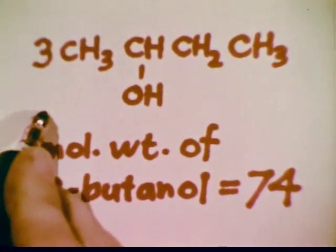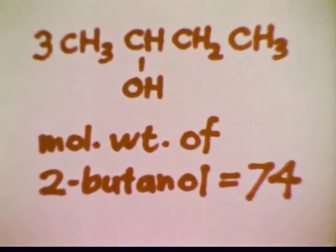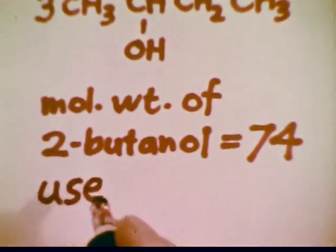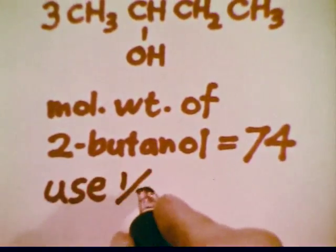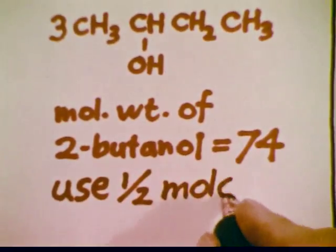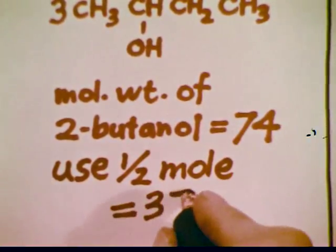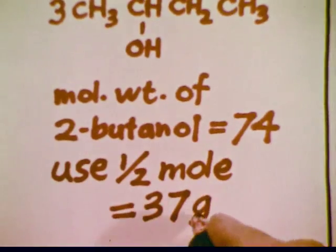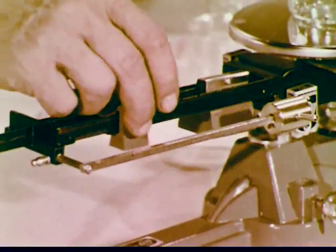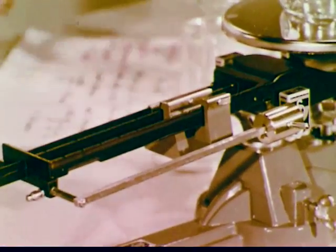2-butanol has a molecular weight of 74. For the size of the apparatus we shall be using, one half mole of butanol will be a convenient amount. One half mole will be half of 74, or 37 grams. First, the empty beaker is weighed and the balance set for the 37 grams determined by the calculation.